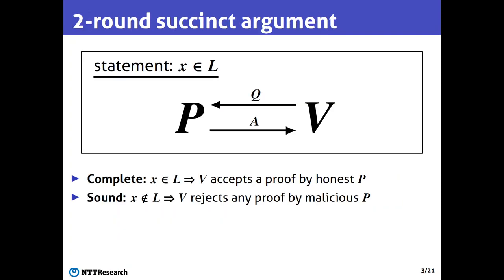What is a succinct argument? A succinct argument is a two-party protocol between a prover P and a verifier V. The goal of a succinct argument is that the prover convinces the verifier of the correctness of the statement. In this work, we focus on two-round succinct arguments. So the protocol consists of just two messages: the first message is a query message from the verifier, and the second message is an answer message from the prover.